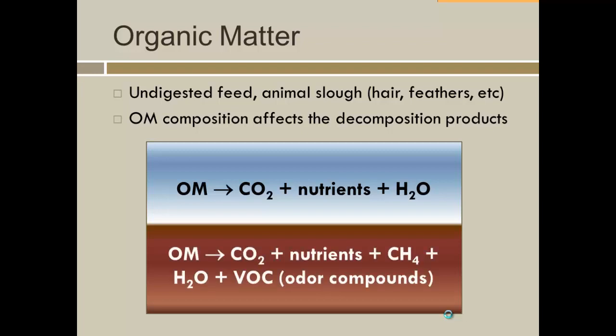In anaerobic systems, the breakdown doesn't go as far. You get some CO2 production and nutrients, and if it goes all the way in an anaerobic system, methane is the final end product — which is what you're going after if you're using a digester to generate methane gas for energy. You can also get stuck at certain levels where you get volatile organic compounds, or VOCs — those are the odor compounds. Basically, you've gotten partway down the decomposition route and just kind of gotten stuck.